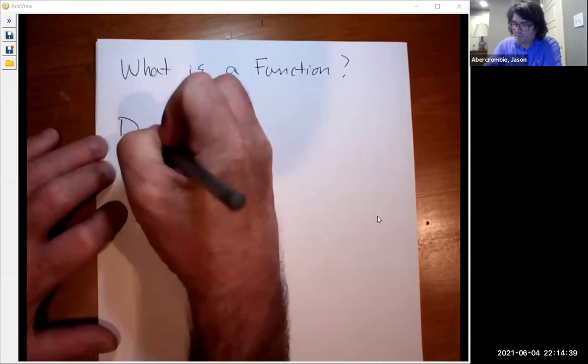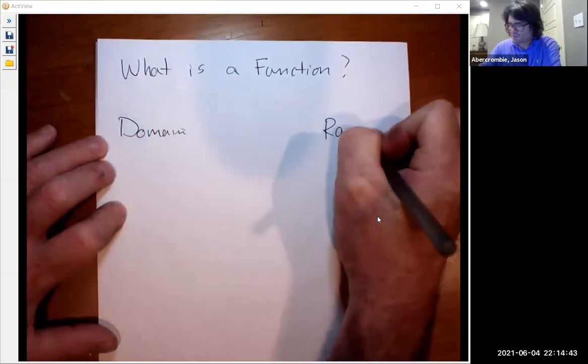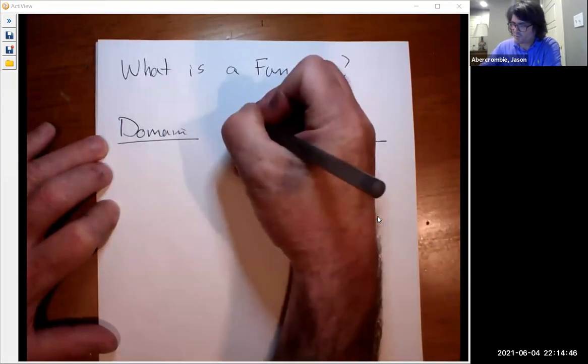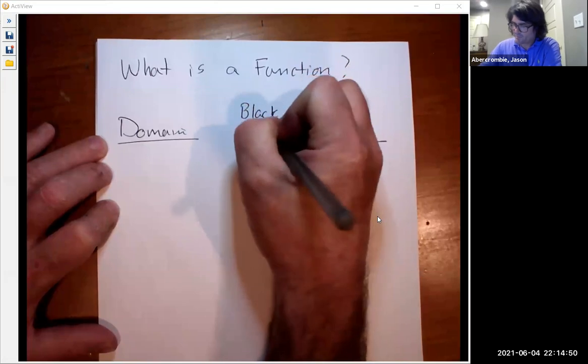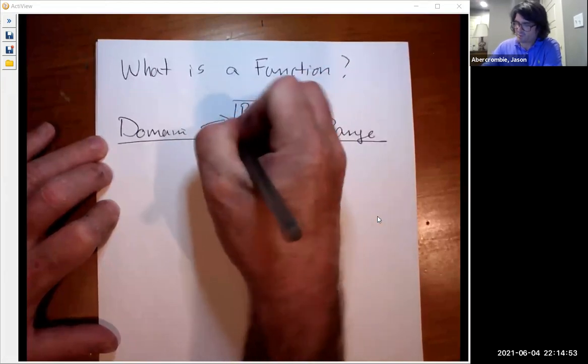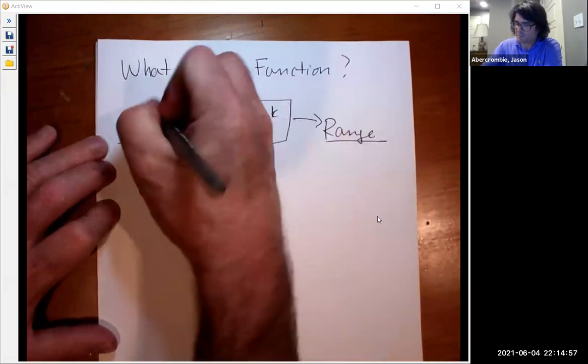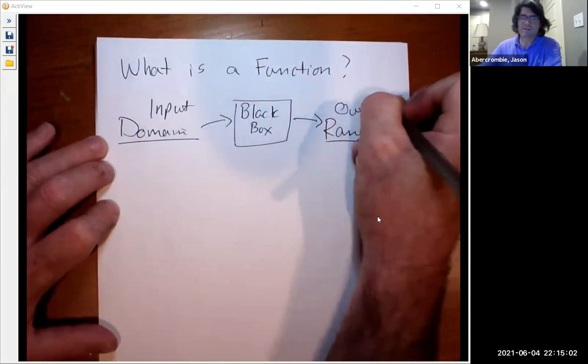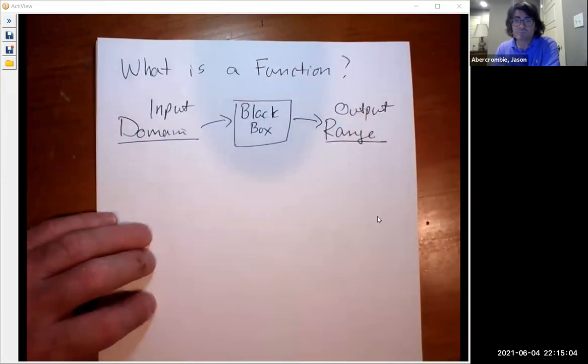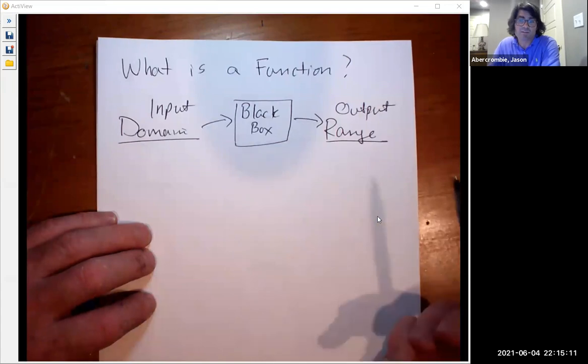So I'm going to write down domain and range, and let's just kind of do a write down black box. The function is like a black box. Something goes into the black box, that's an input, a domain, and it produces an output which is called the range. And the function does something with the input, the domain, that produces the output. That's all it is.